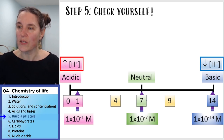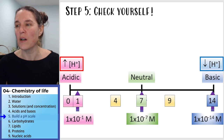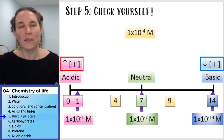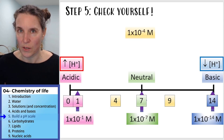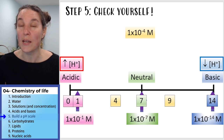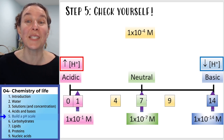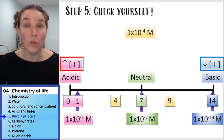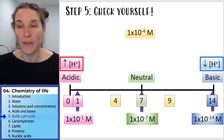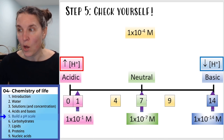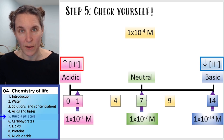Let's check ourselves. If you had a solution with a 1×10⁻⁴ molar concentration of an acid, where is it going to go on the pH scale?